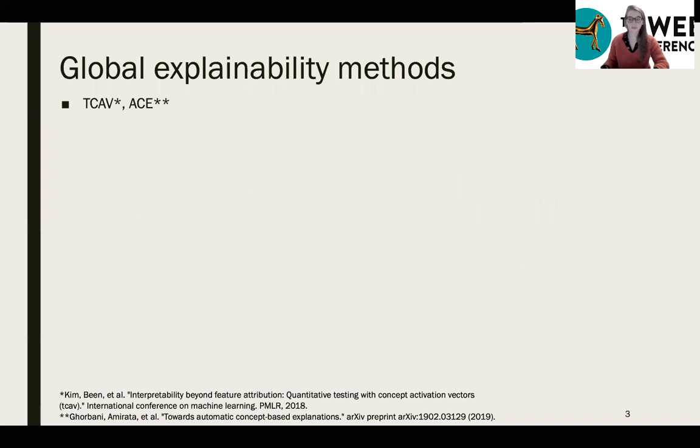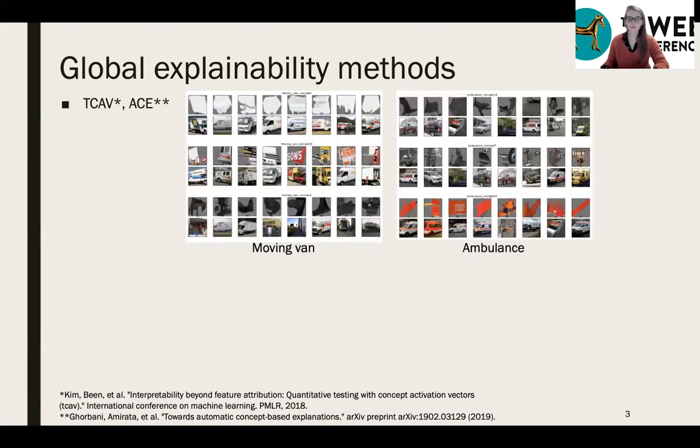There already exist two types of methods to get explanations about the mechanisms the model has learned. The first type is the global type with global explainability methods. These methods take as input a model to explain and a set of images on which the model can be applied. They output visual concepts the model generally makes use of when making predictions of the different classes. Each visual concept is expressed by a list of image patches to interpret into one concept. On this image, for instance, one row corresponds to one concept. The first row might express the light gray color concept for the moving van, for instance.